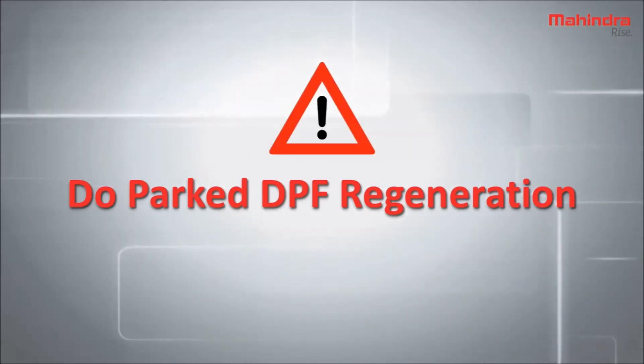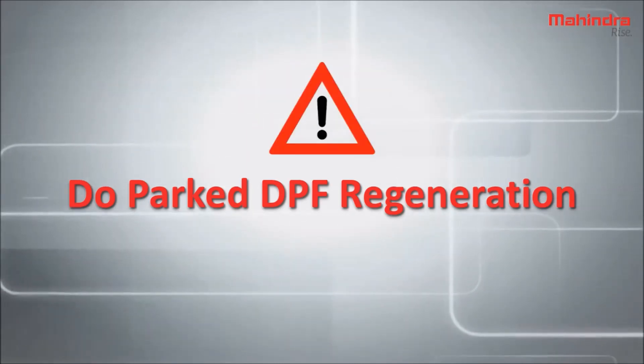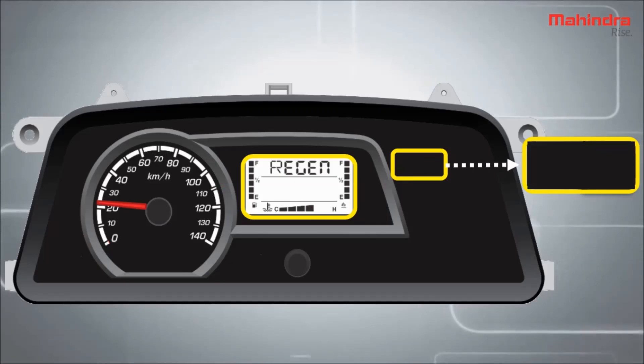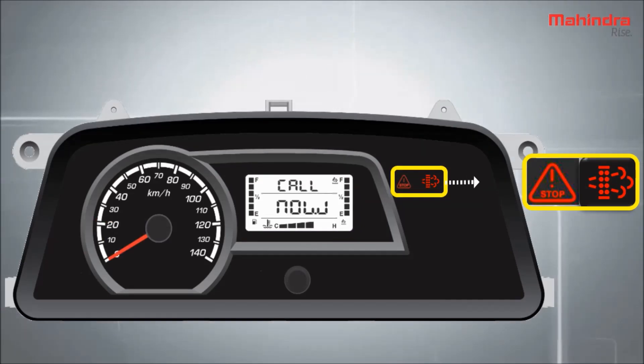Even after these indications, if the regeneration process is not performed, then both the DPF regeneration indicator and stop lamp will start blinking simultaneously on the instrument cluster. This is the last chance for the driver to complete the parked regeneration process as described earlier. If the regeneration is not performed even after this warning, the vehicle can't be moved further.